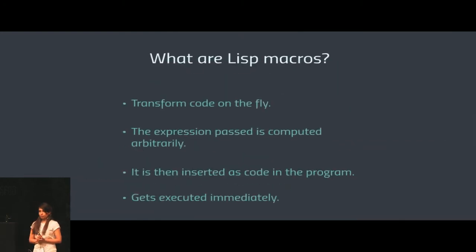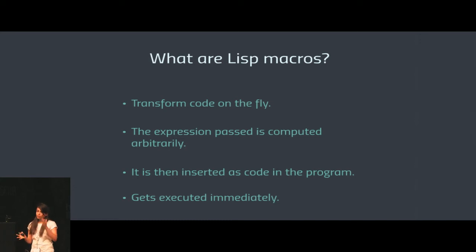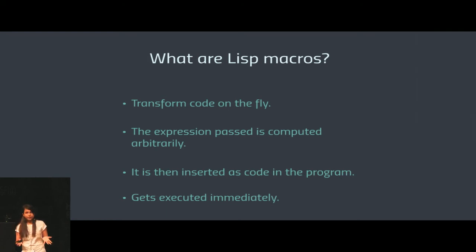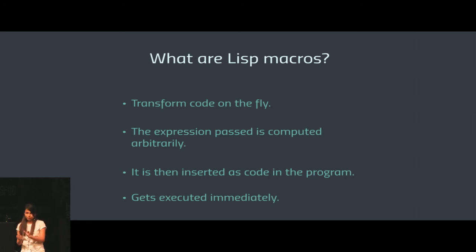We're talking about Lisp macros. What are Lisp macros? Lisp macros are a way to transform code on the fly. During macro expansion, the expressions passed to the macro function are computed and inserted into the program as code, as if they were originally present in the program. When the compiler or interpreter sees the code, it executes it immediately — it looks like it was originally part of the program. That is the purpose of using macros.